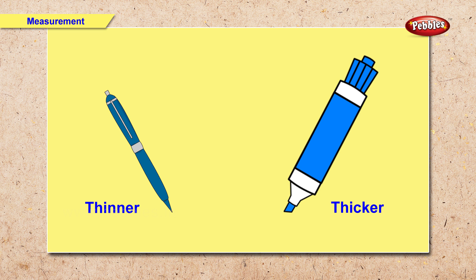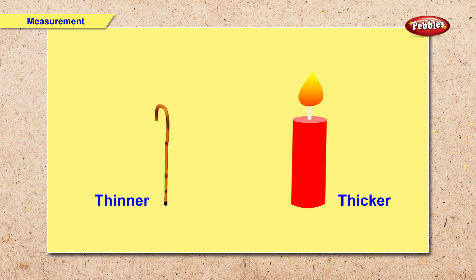Now we have a pen and a marker. So now you tell me which object is thicker and which object is thinner. Now we have a candle and a stick. You tell me which object is thicker and which object is thinner. Right. The candle is thicker. The stick is thinner.